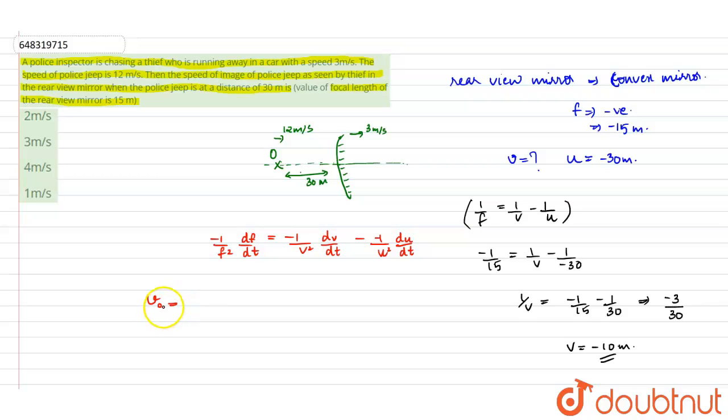The relative velocity of the object, v_om, is v_o minus v_m. That gives us 12 minus 3, which equals 9 meters per second.